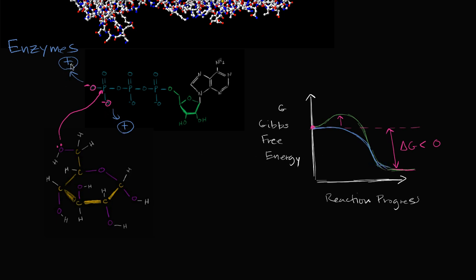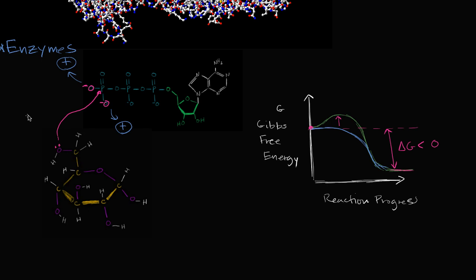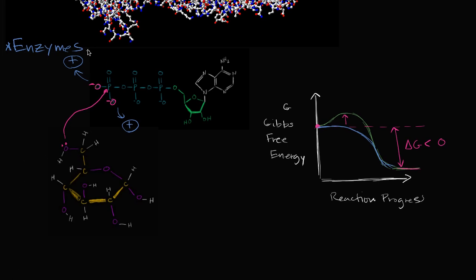But what are these enzymes? These things that can maybe place some interesting charge that can allow the reaction to happen a certain way. It might bend the molecules in a certain way to expose some bonds. It might have a more acidic or basic environment that might be more favorable for the reaction. What are these seemingly magical things? Well, at a very high level, they tend to be these protein complexes, plus or minus a few other things. Maybe sometimes there'll be multiple polypeptide chains put together. They might have some other ions associated with them. But for the most part, they are proteins.